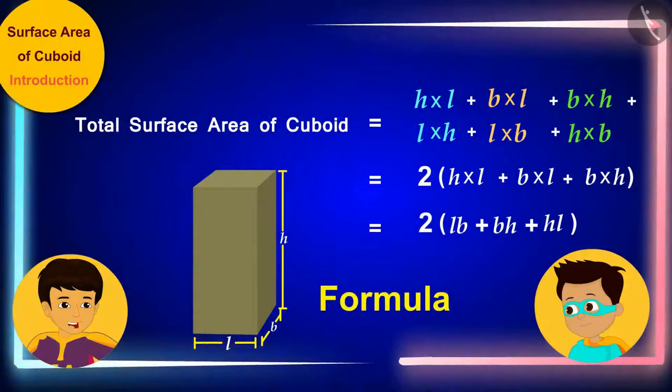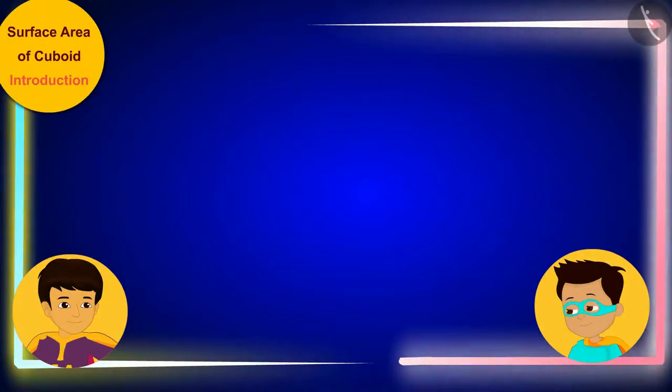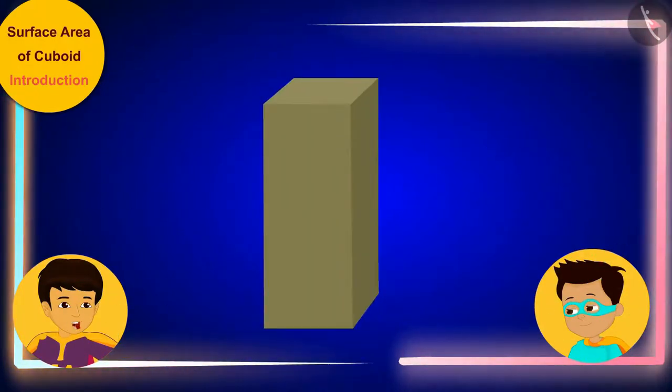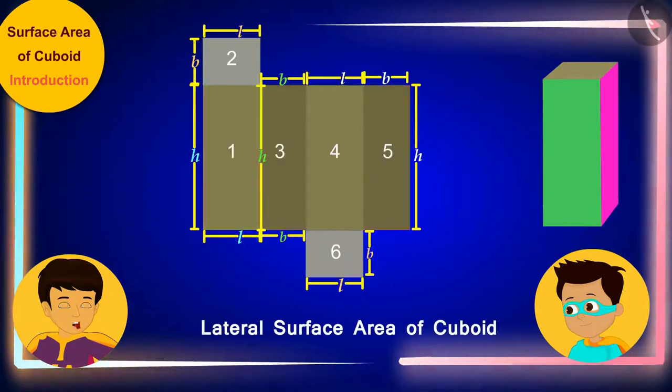And Thomas, do you know another interesting thing? If we leave out the bottom and top surfaces of any cuboid, the sum of the area of the remaining surfaces is called the lateral surface area of that cuboid.